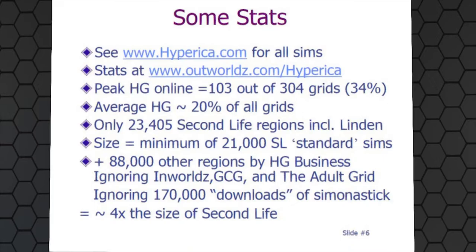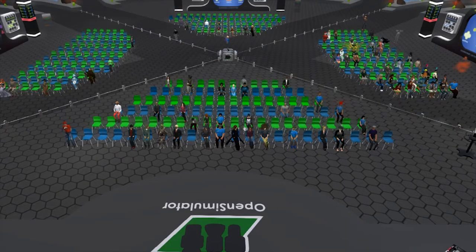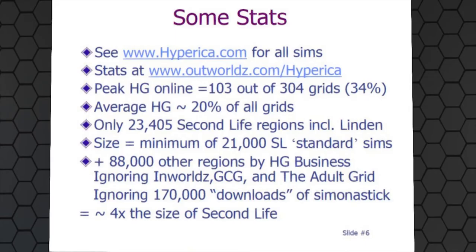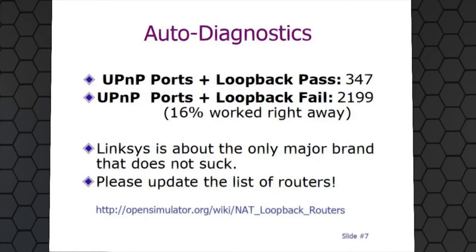DreamWorld typically represents about 20% of all known grid space. There are about 23,500 Second Life regions according to the SimStat service online, so if you add up all of OpenSim we're over 100,000 sims — over four times the size of Second Life in regions — and that's not counting InWorldz, the Great Canadian Grid, the adult grid, or the 370,000 downloads of Sim on a Stick. Last year there were about 90,000 downloads of Sim on a Stick, which can be hacked into Hypergrid and is essentially straight Diva Distro.